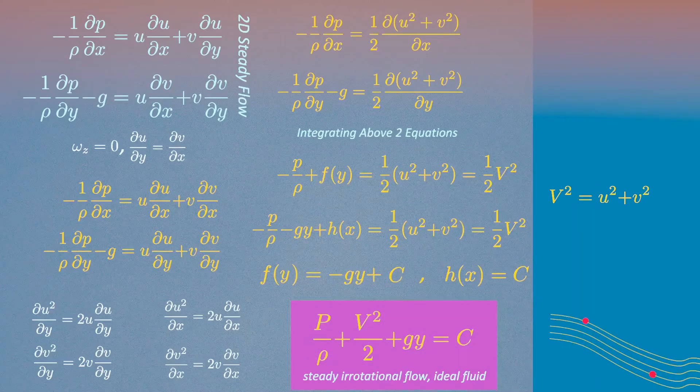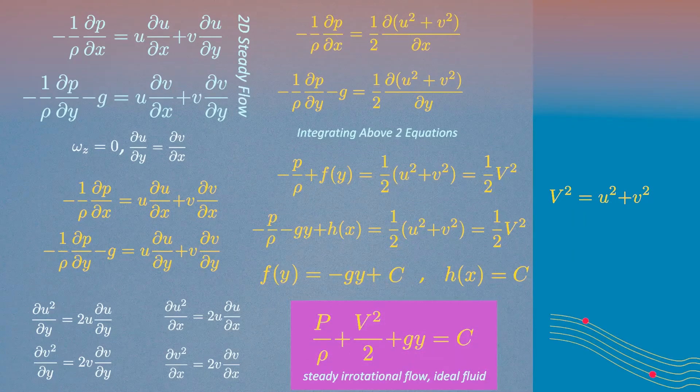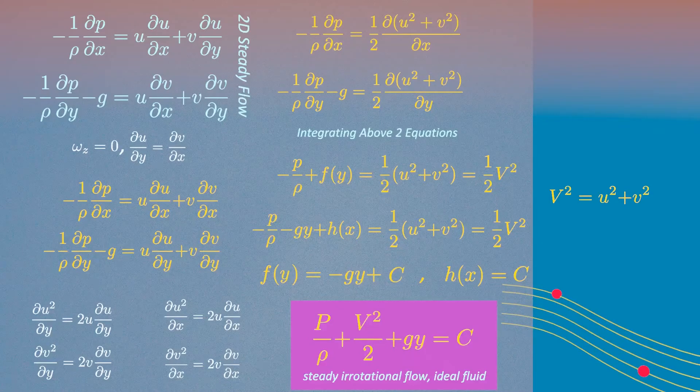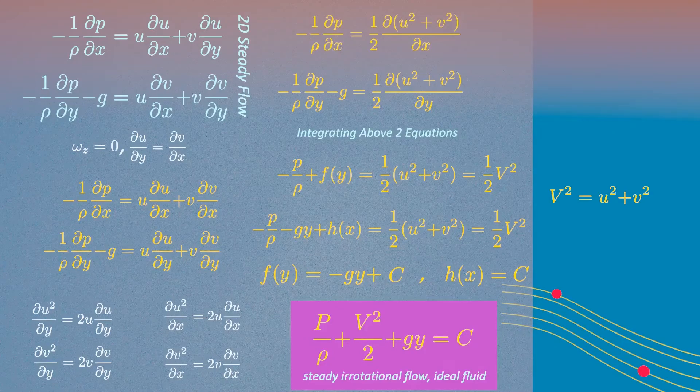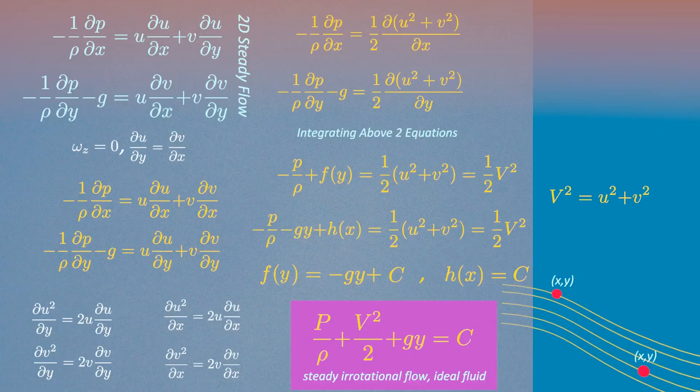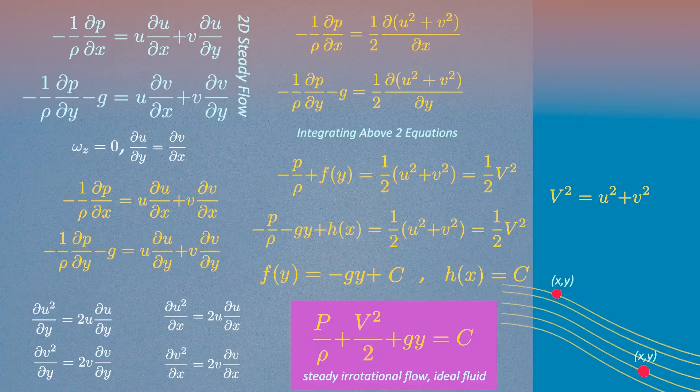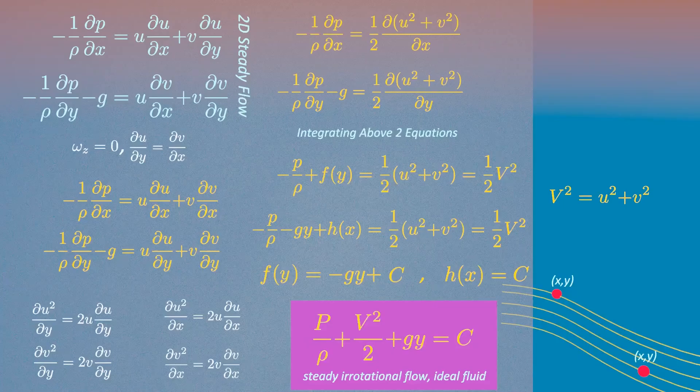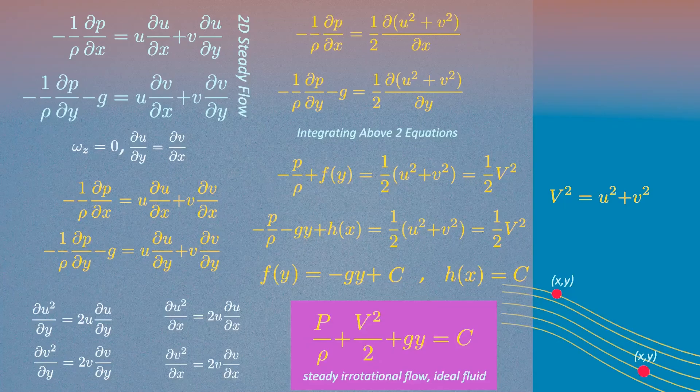Thus, if the flow is irrotational, then the Bernoulli equation may be applied between any two points that are not necessarily on the same streamline. Of course, as noted, we must also require the fluid to be ideal and the flow to be steady.